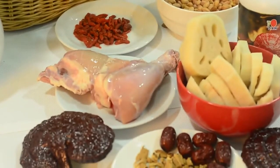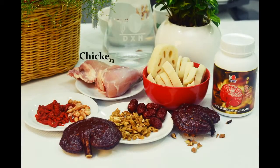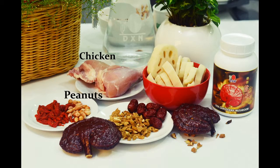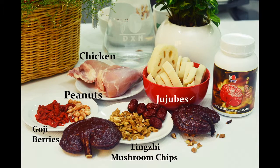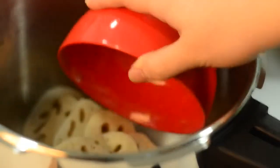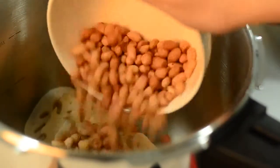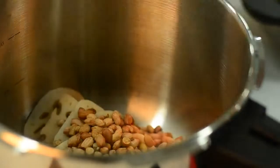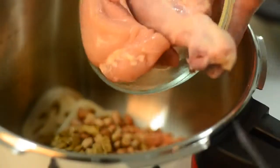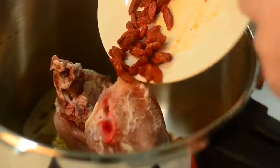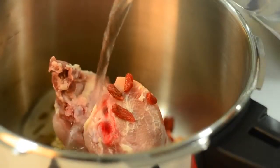These are the ingredients for this recipe. Add in the ingredients into the pressure cooker: the lotus root, peanuts, red dates, lingzhi mushroom chips, chicken, and the goji berries. Then add water.